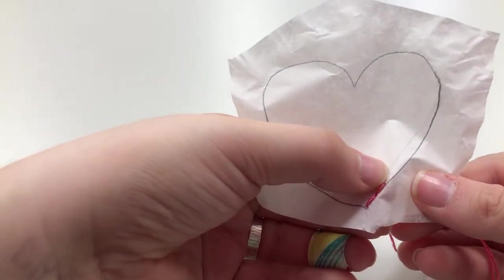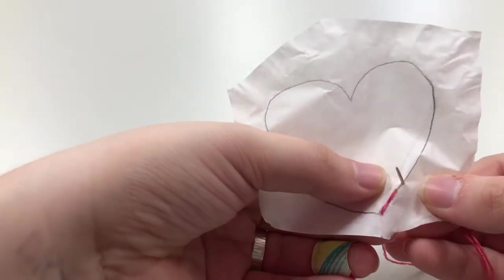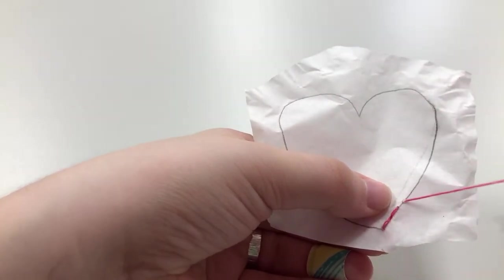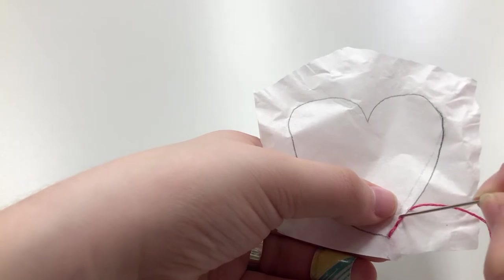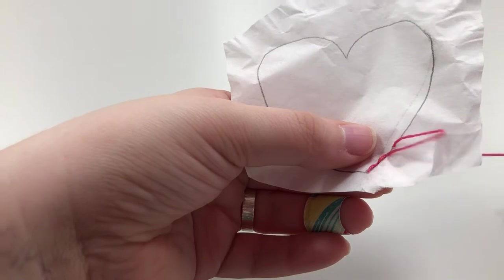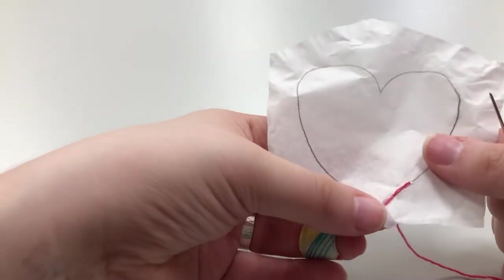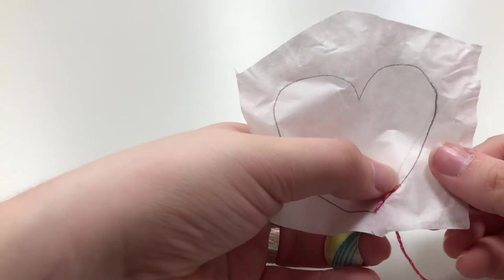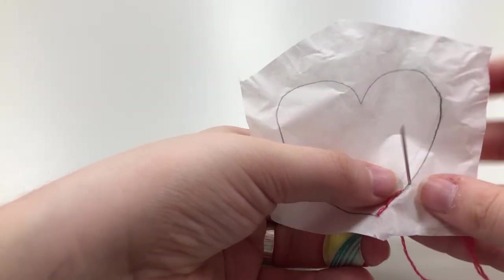Again, you're going to come up about a centimeter through, go back to where your last stitch ended, push your needle through, pull it tight. We've got a nice little stitch going. And we're going to keep doing that until we've covered about half the heart.